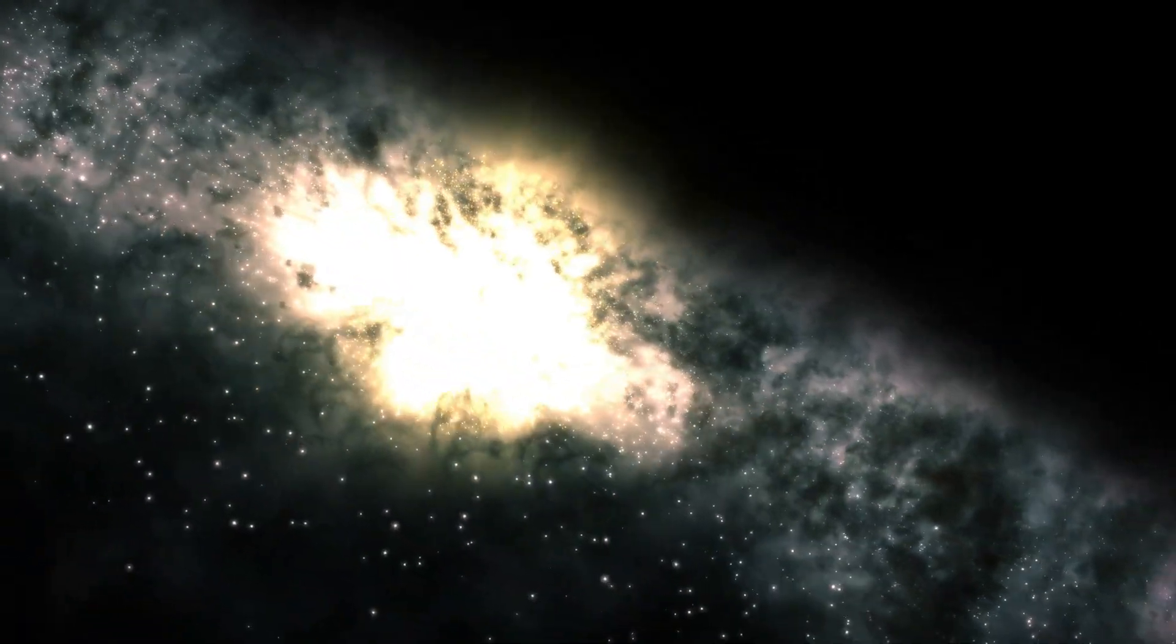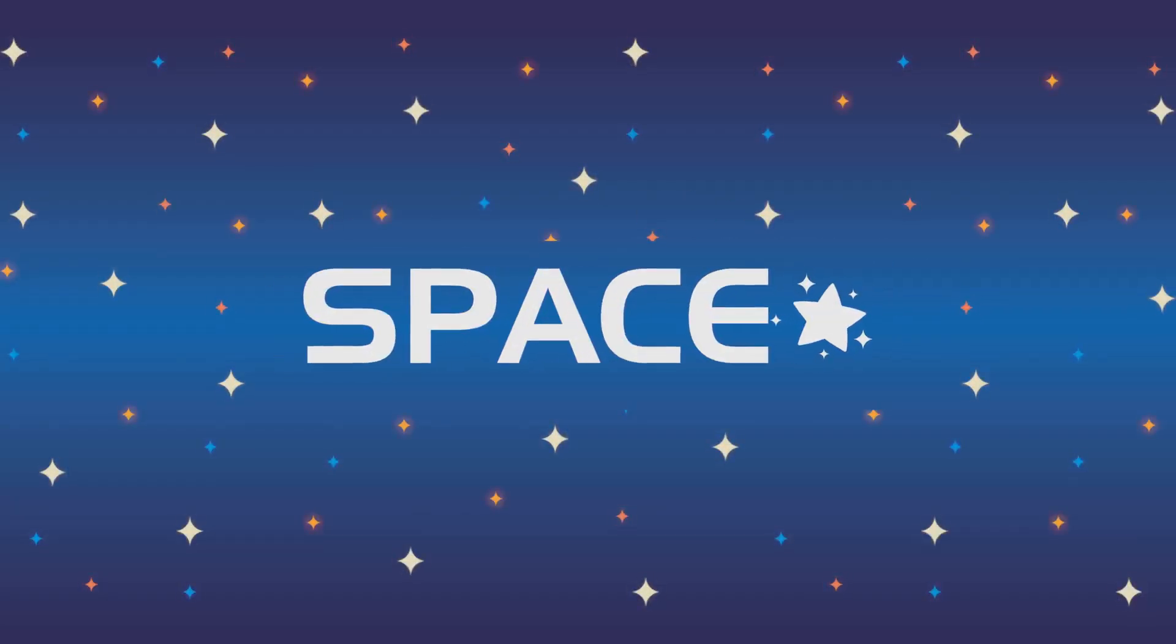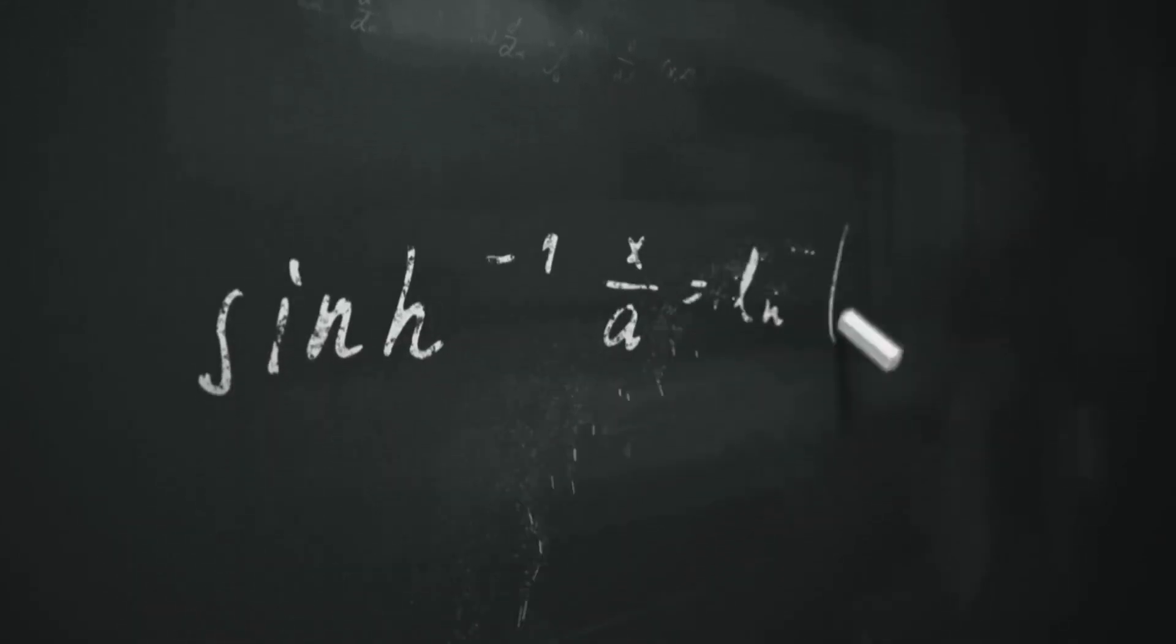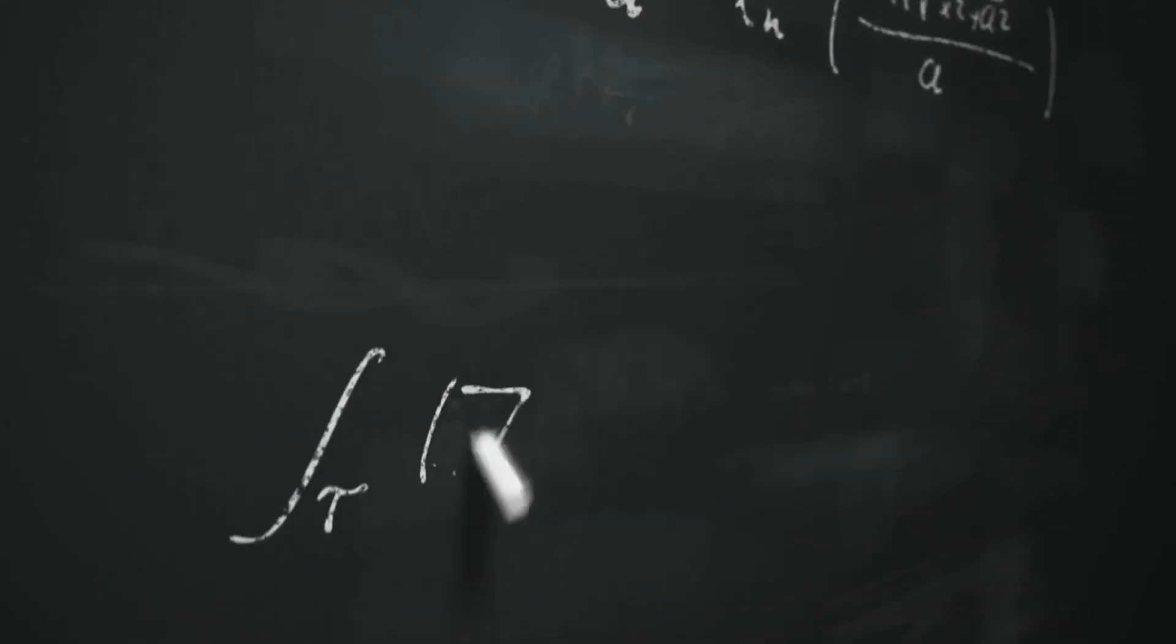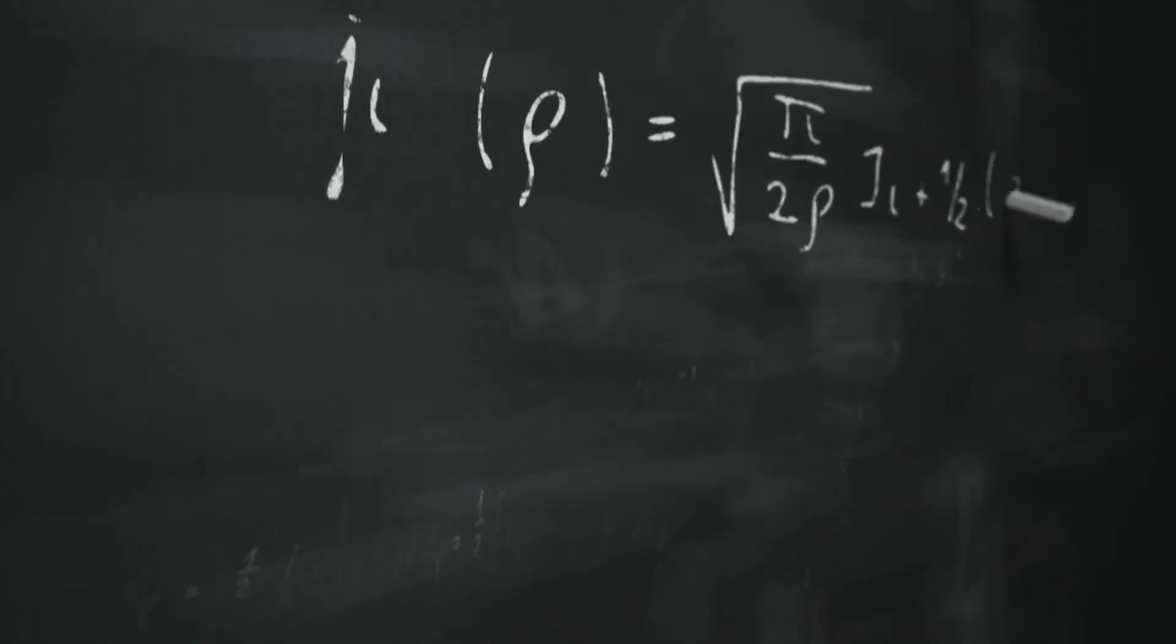Even space itself may not be continuous. It may be pixelated, just like a digital screen. Which means your position, your mass, your field, are all just variables on a grid. And the more aligned you are, the simpler the math becomes. The less friction in the field. The fewer instructions needed to keep your life together.